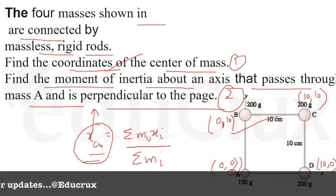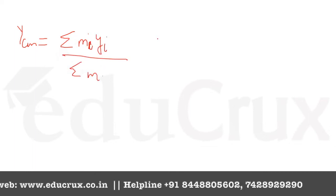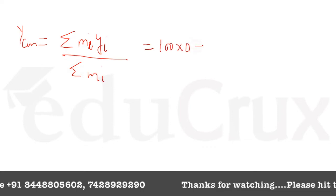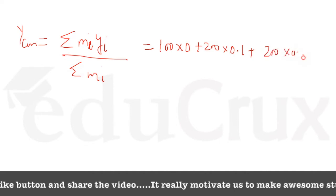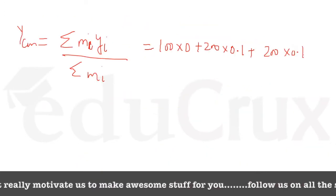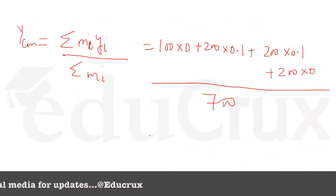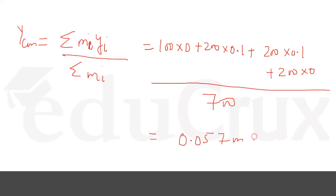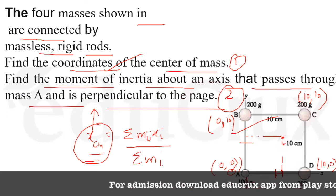Now for y_cm: y_cm = summation of m_i * y_i divided by summation of m_i. Substituting: (100×0 + 200×0.1 + 200×0.1 + 200×0) / 700. This also comes out to 0.057 meters, which is 5.7 centimeters. So the center of mass is at approximately (5.7 cm, 5.7 cm).